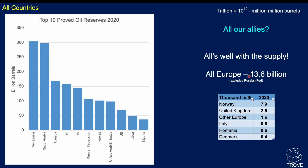Looking at the top 10 producers by reserves, the axis is now in billions of barrels. Venezuela leads at around 300 billion barrels with the Orinoco oil sands, followed by Saudi Arabia — a major producer and exporter. Then Canada with the Athabasca tar sands, lots of reserves but not much production. Then Iran, Iraq, the Russian Federation, Kuwait, UAE, and the USA at around 70 billion barrels. Libya and Nigeria round out the top 10.